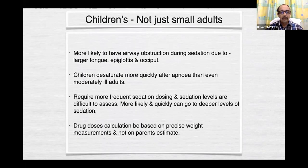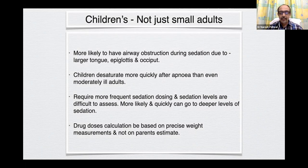In the context of procedural sedation analgesia, children are not just small adults. They are more likely to have airway obstruction during sedation due to larger tongue, epiglottis, and occiput. Children desaturate more quickly after apnea than even moderately obese adults. They require more frequent sedation doses, sedation levels are difficult to assess, and they can more quickly go to deeper levels of sedation. Drug dose calculations must be based on precise weight measurements, not on parent estimates.